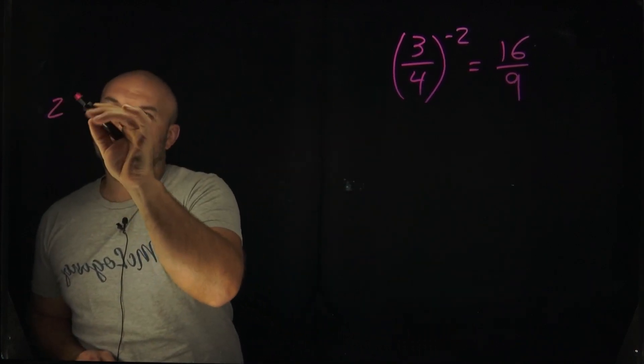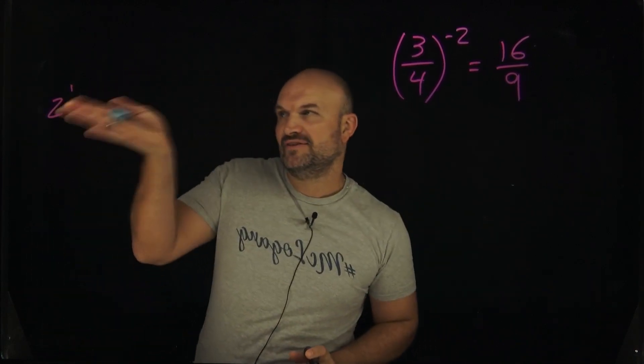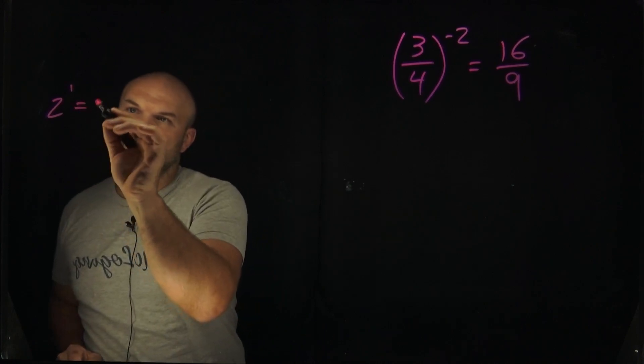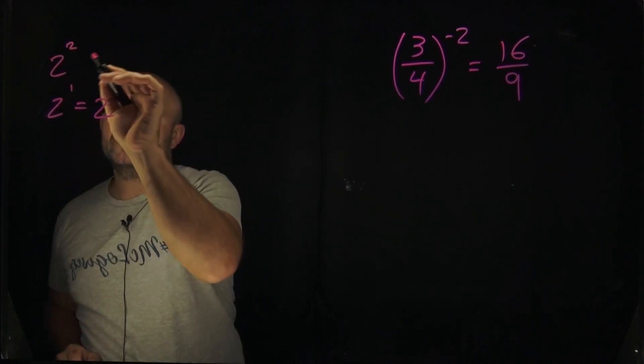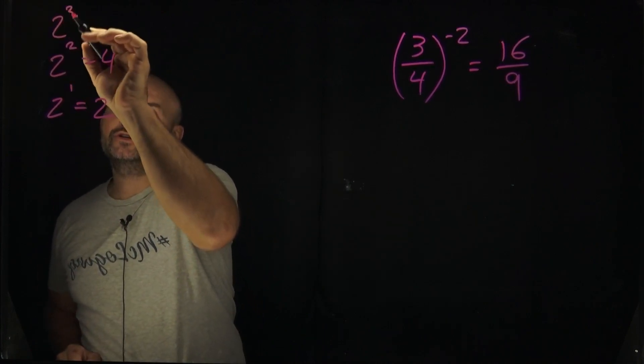So it all comes into taking numbers and raising them to a power. Now if I had 2 raised to the first power, we know that's just gonna be a 2. If I have a 2 squared, that's gonna equal 4, and a 2 cubed is equal to an 8.